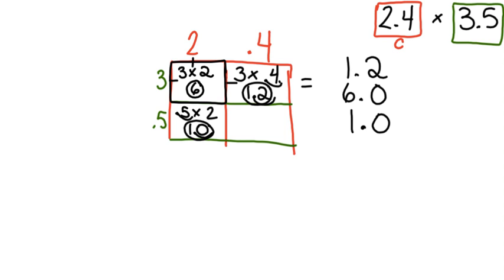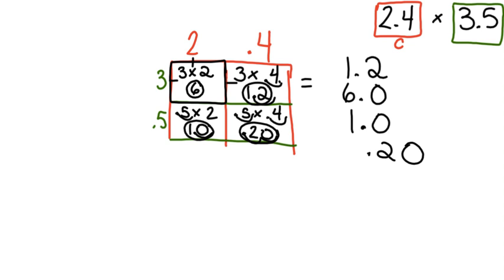The last smaller problem is 5 tenths times 4 tenths. I know 5 times 4 is 20, but I have two numbers with decimals, so I am going to jump one place for that number and one place for that number to make a total of two jumps — one, two. My new number is 20 hundredths, or two tenths; they are equivalent. However, I am going to stick with 20 hundredths and add zeros to the rest of these numbers to make sure all my place value is consistent.